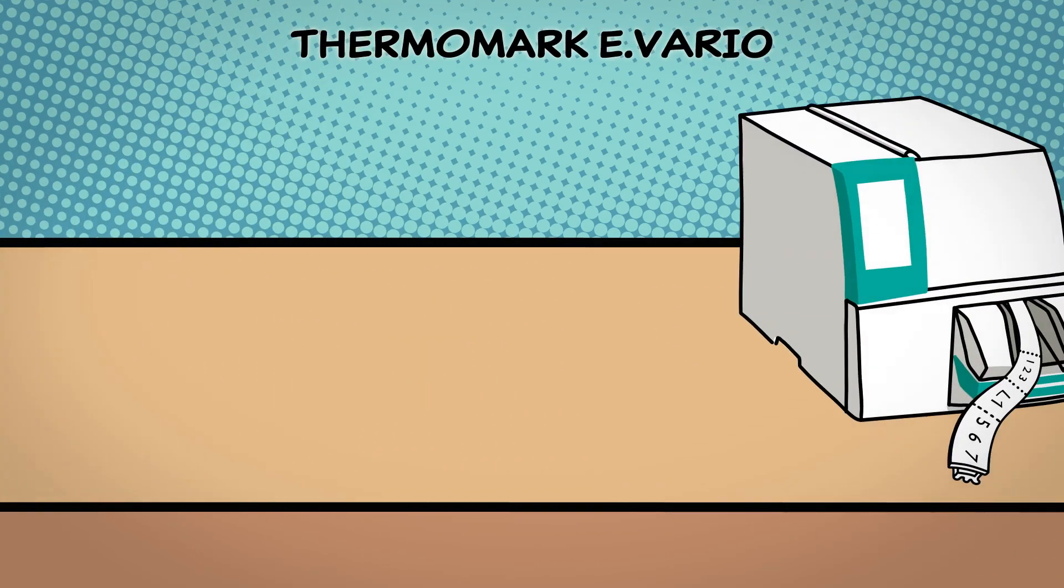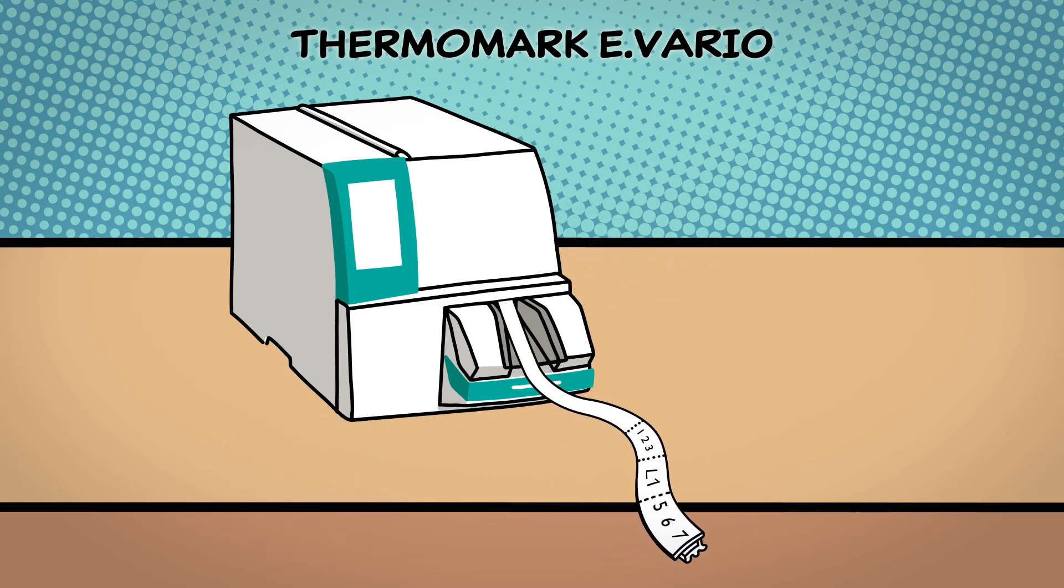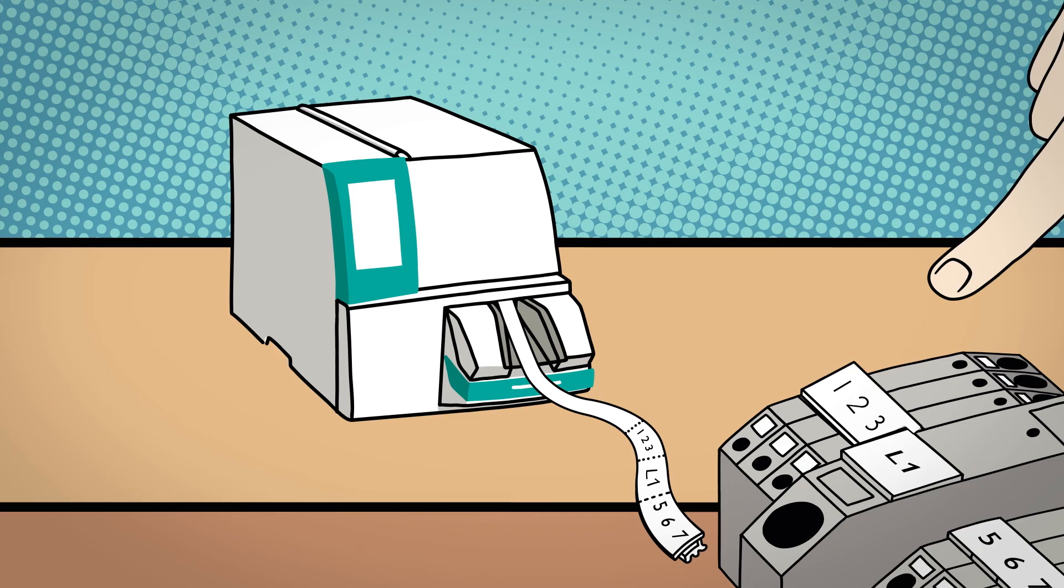The Thermomark E-Vario marks entire terminal strips with just two materials in continuous format for tall and flat marking grooves.